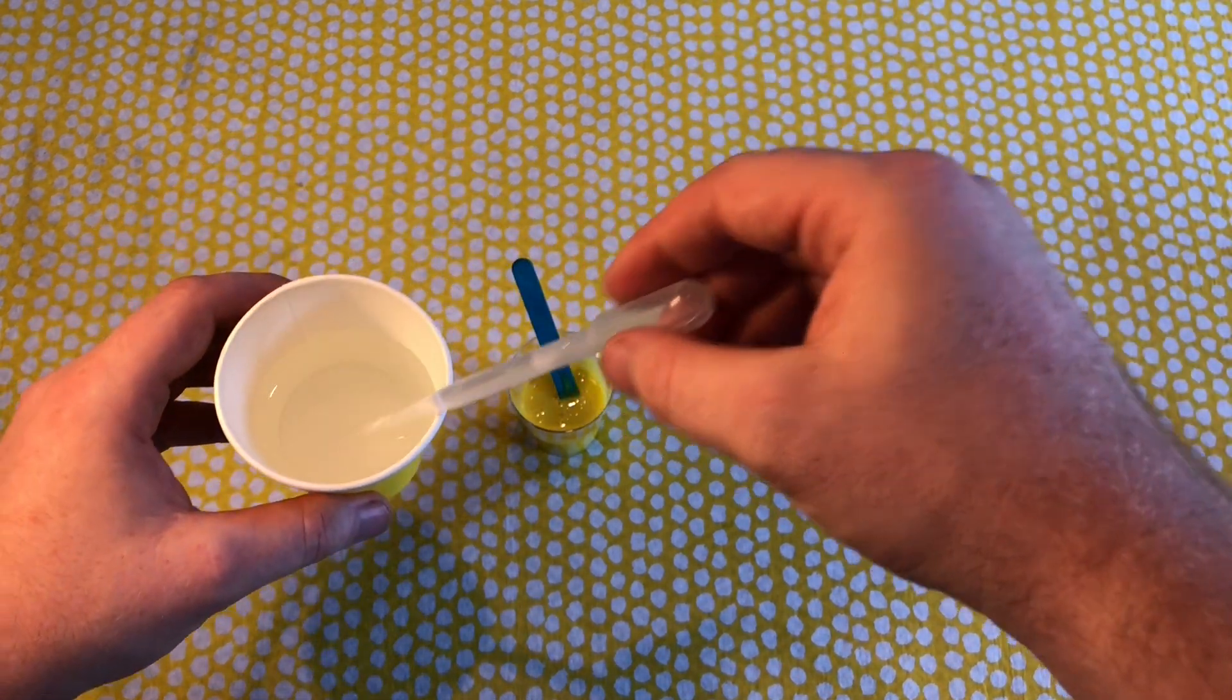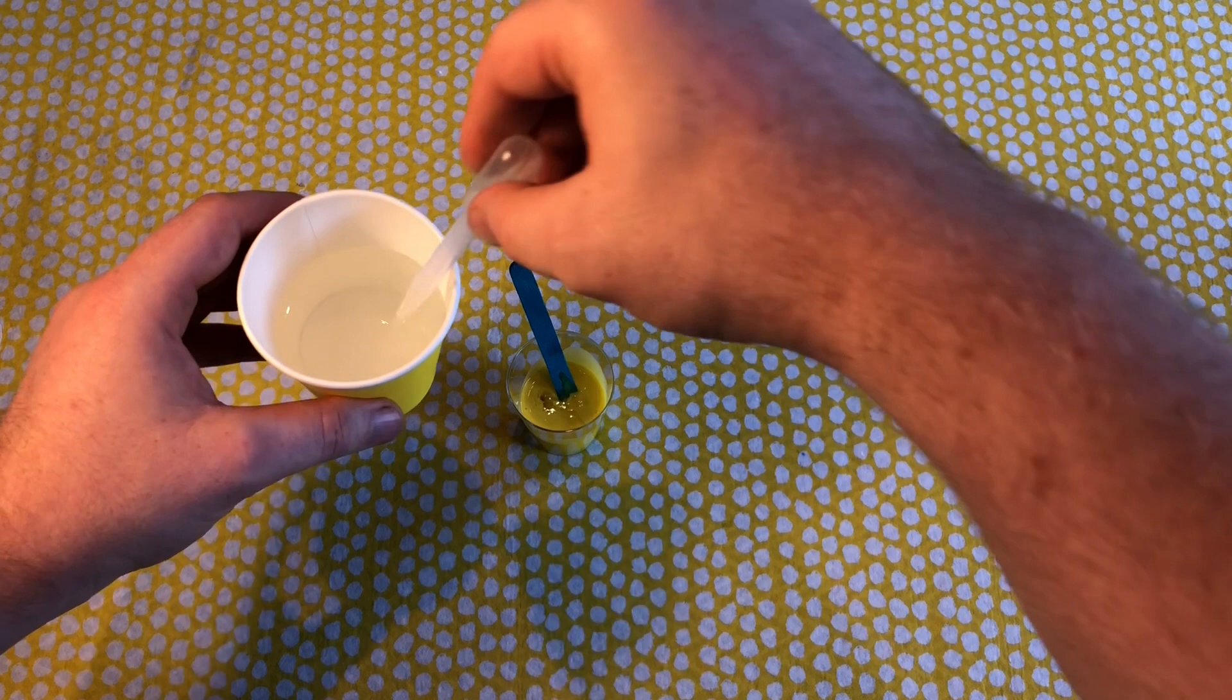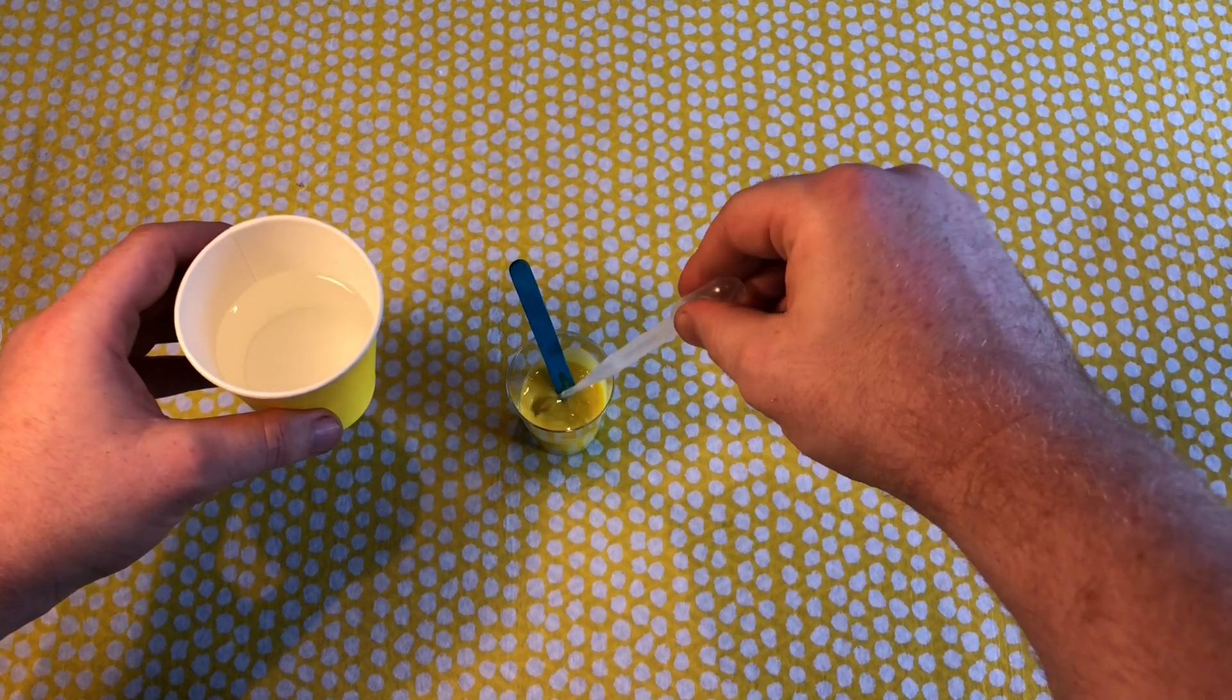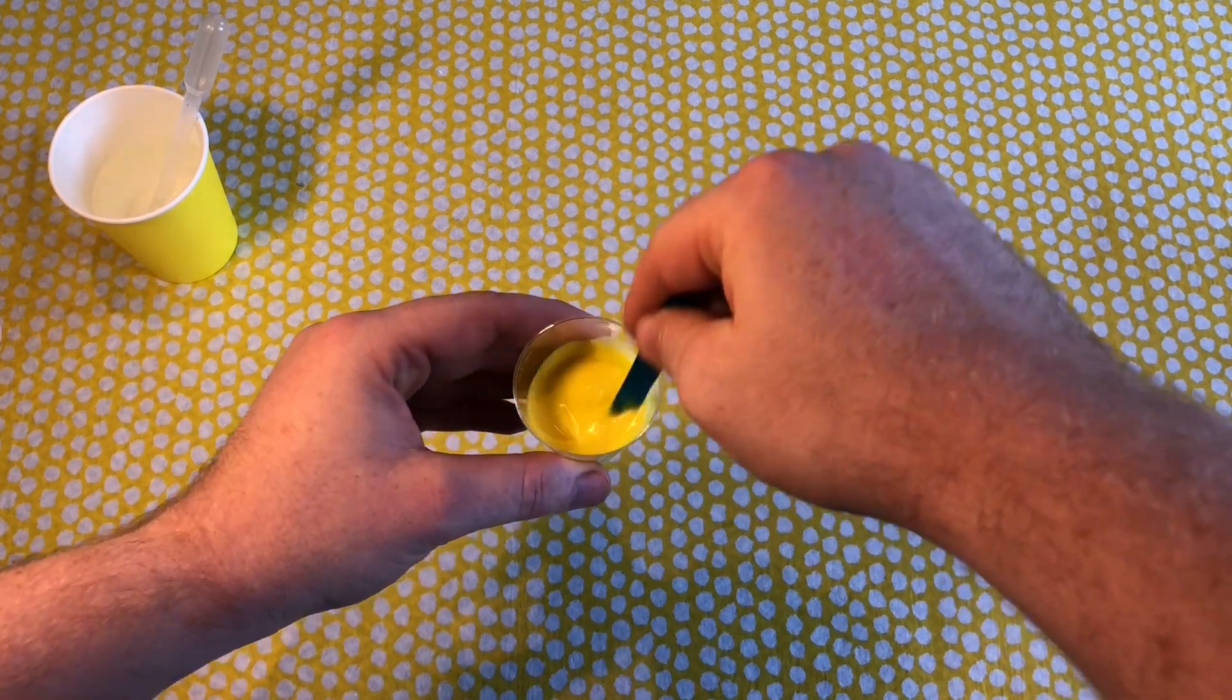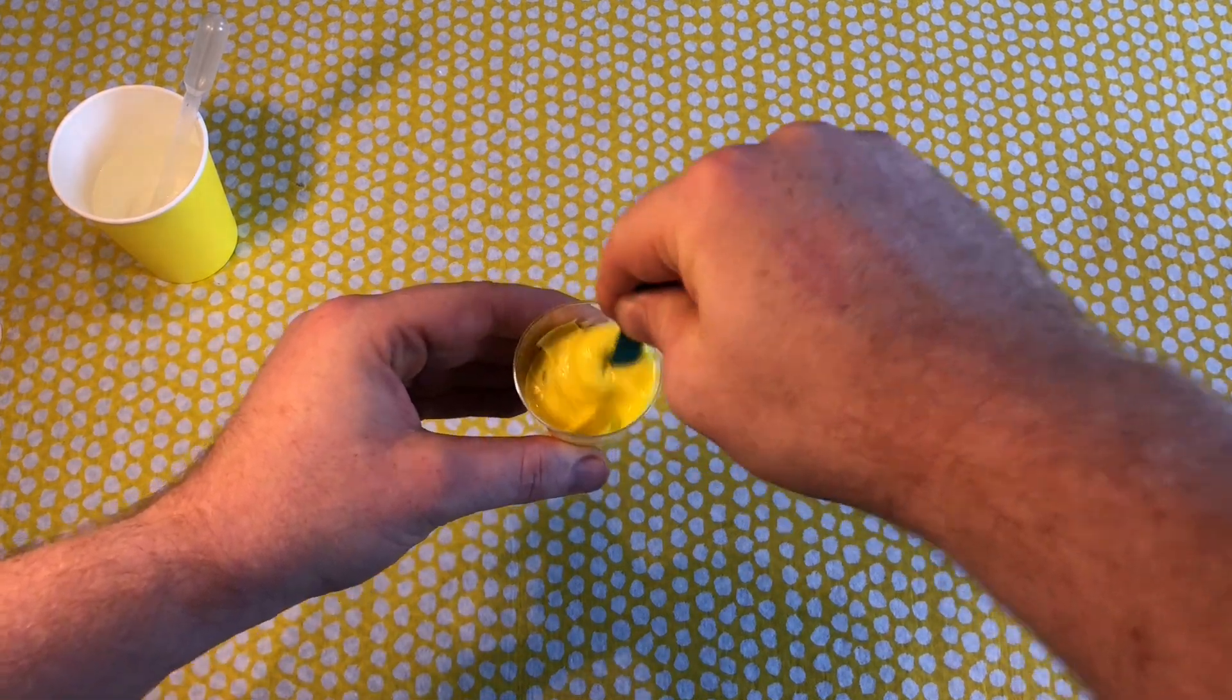Transfer that liquid over to your slime cup with two to three squirts. Be really careful because you don't want to put too much in there, otherwise it will over-activate your slime.